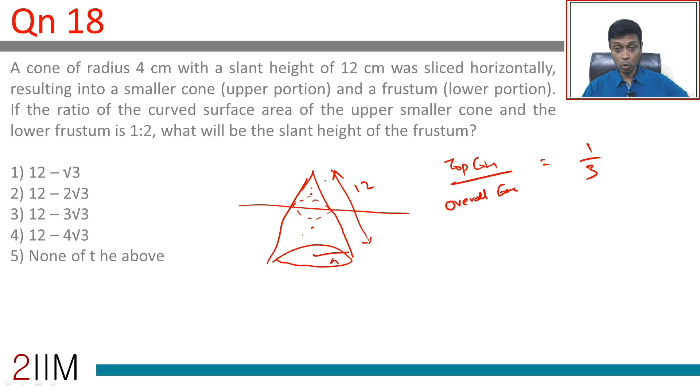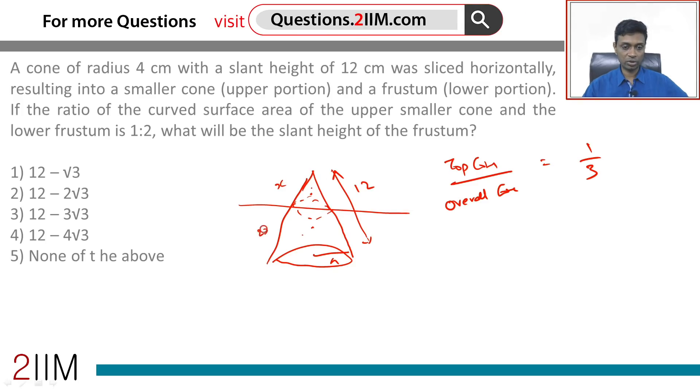This is x, this alone is 2x. x plus 2x is 3x, so it's 1:3, right? The area of the curved surface is πrl. So if you call this as r and this as l, this one is L and this one is R.